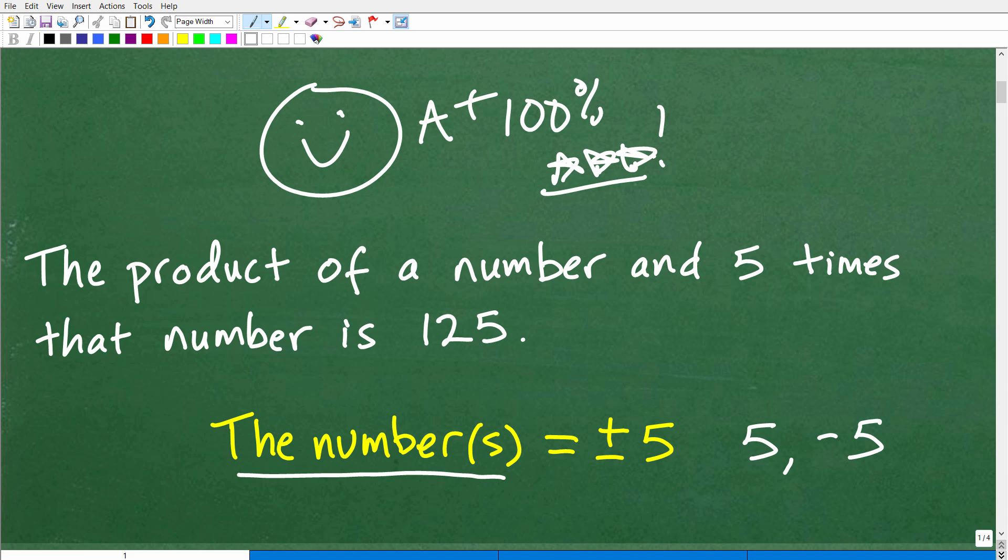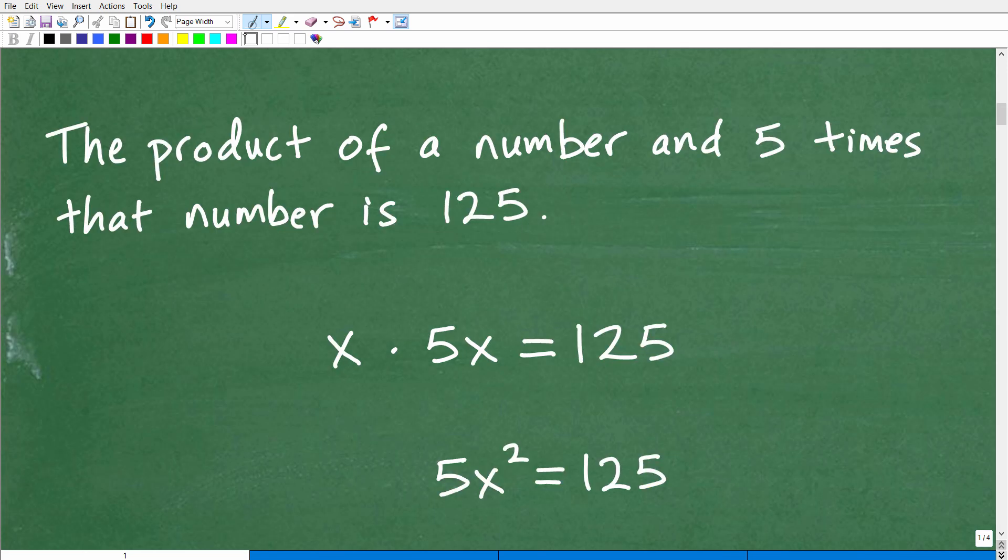And again, the topic here is translating. We need to translate this verbal sentence into something that we can understand mathematically or algebraically. And let's take a look at that now. Okay, so what we need to do is literally read the sentence one word at a time and replace these words, translate each word for something mathematically. Okay, so a mathematical notation. And we're going to just do that now.